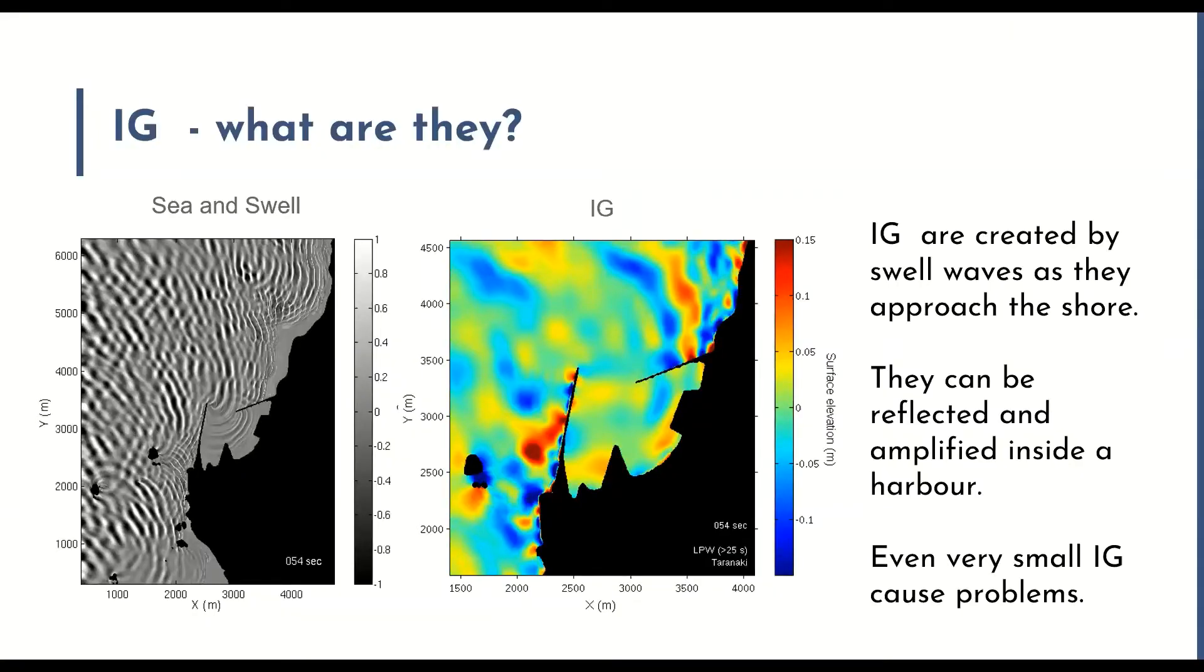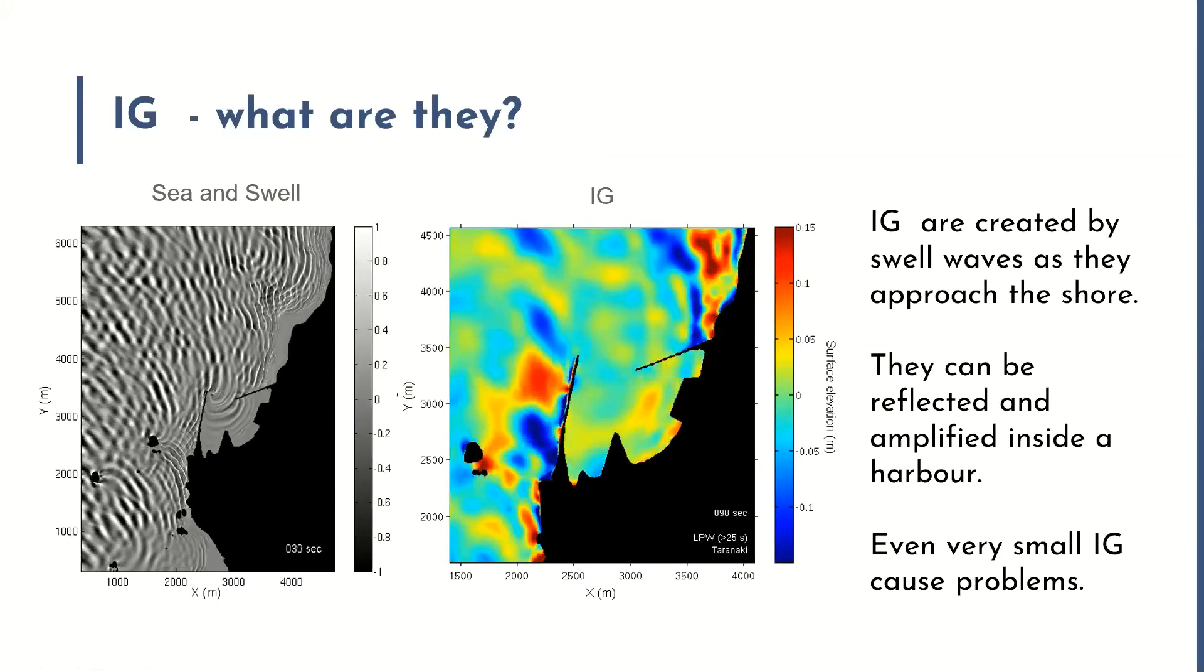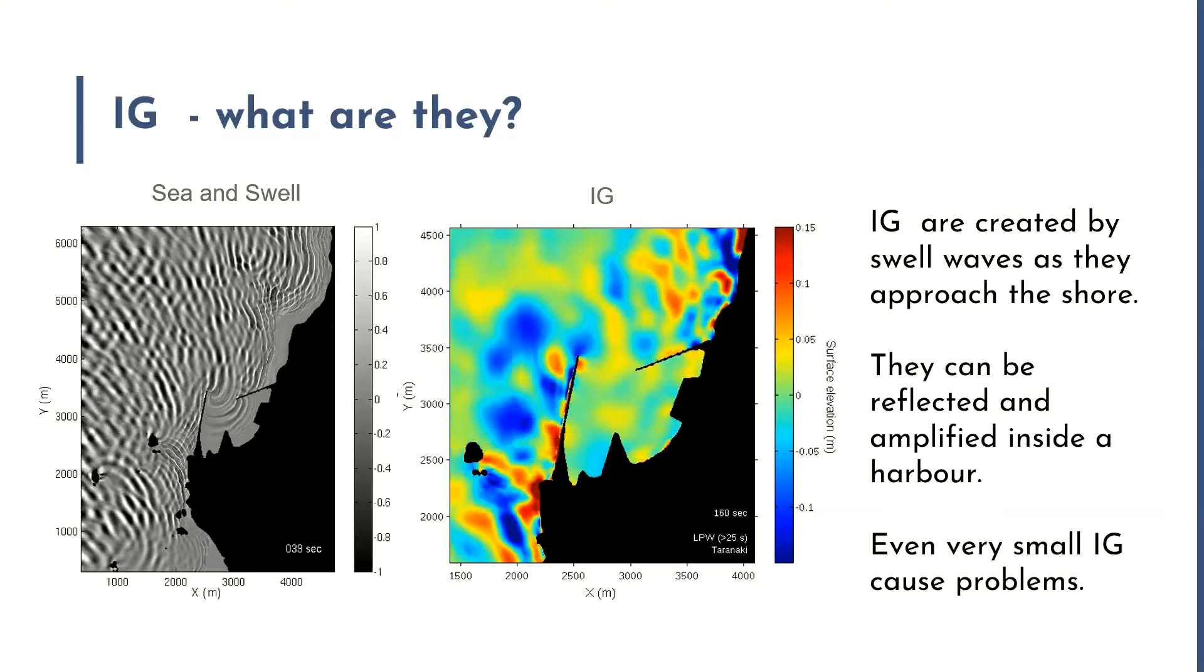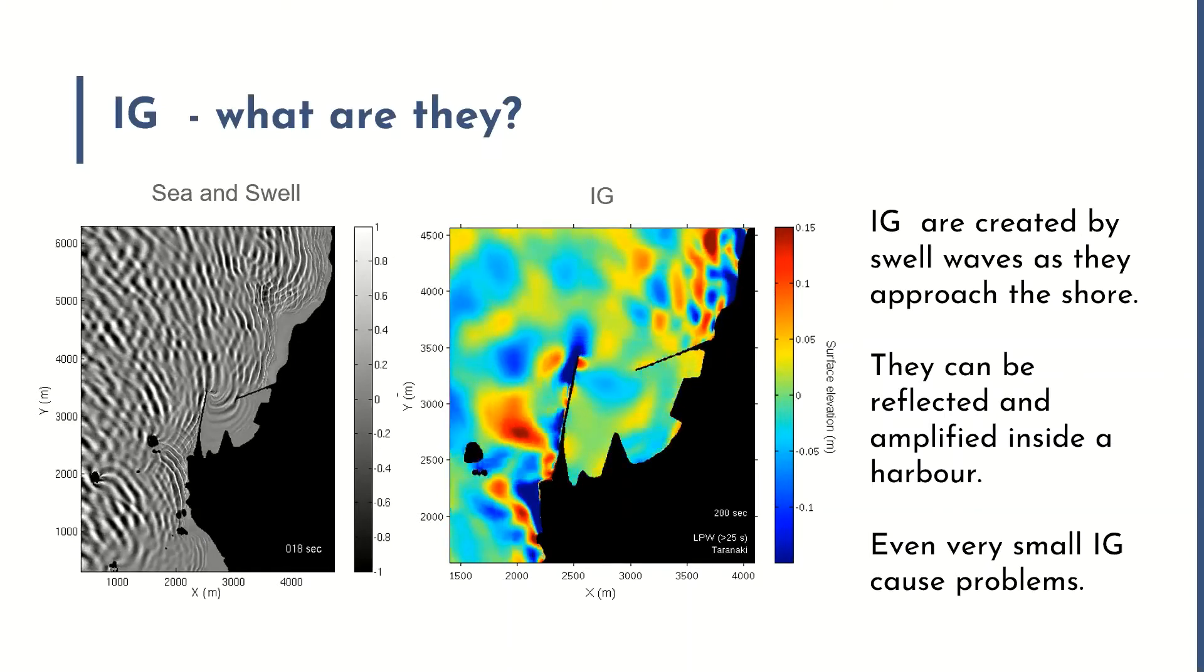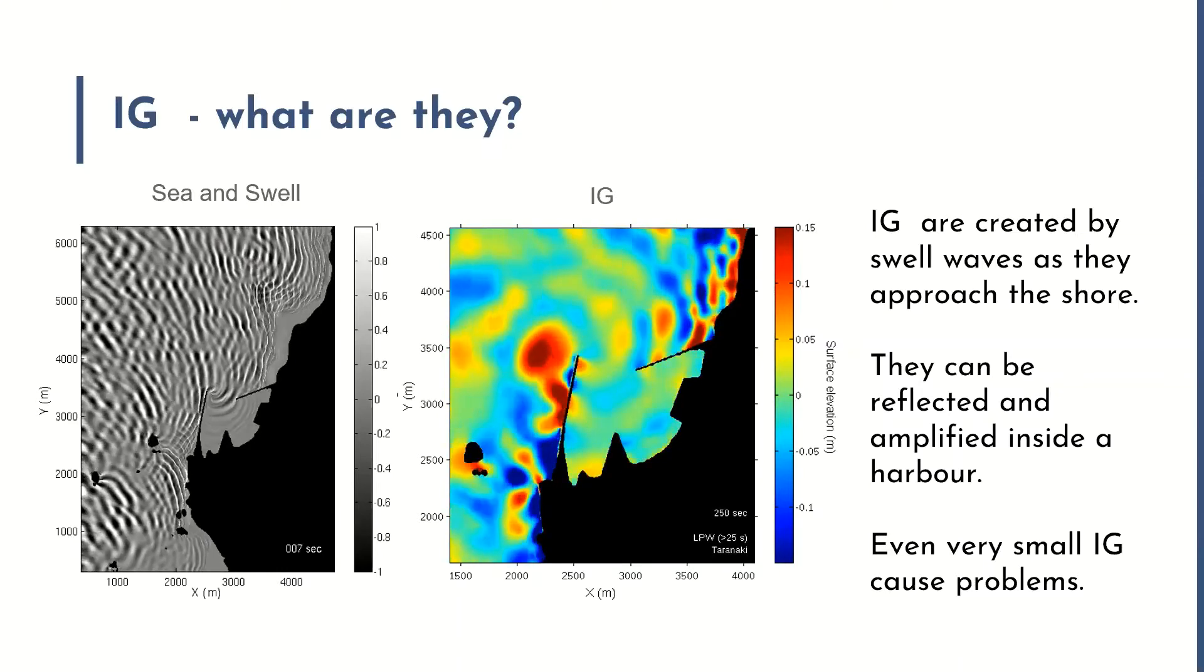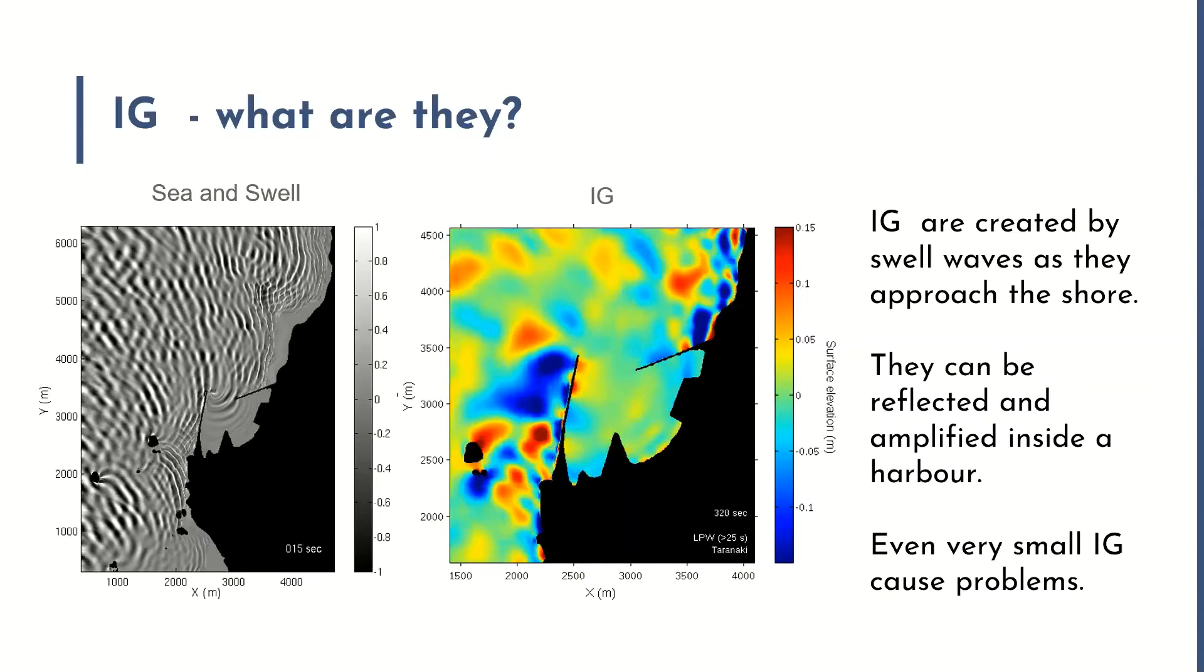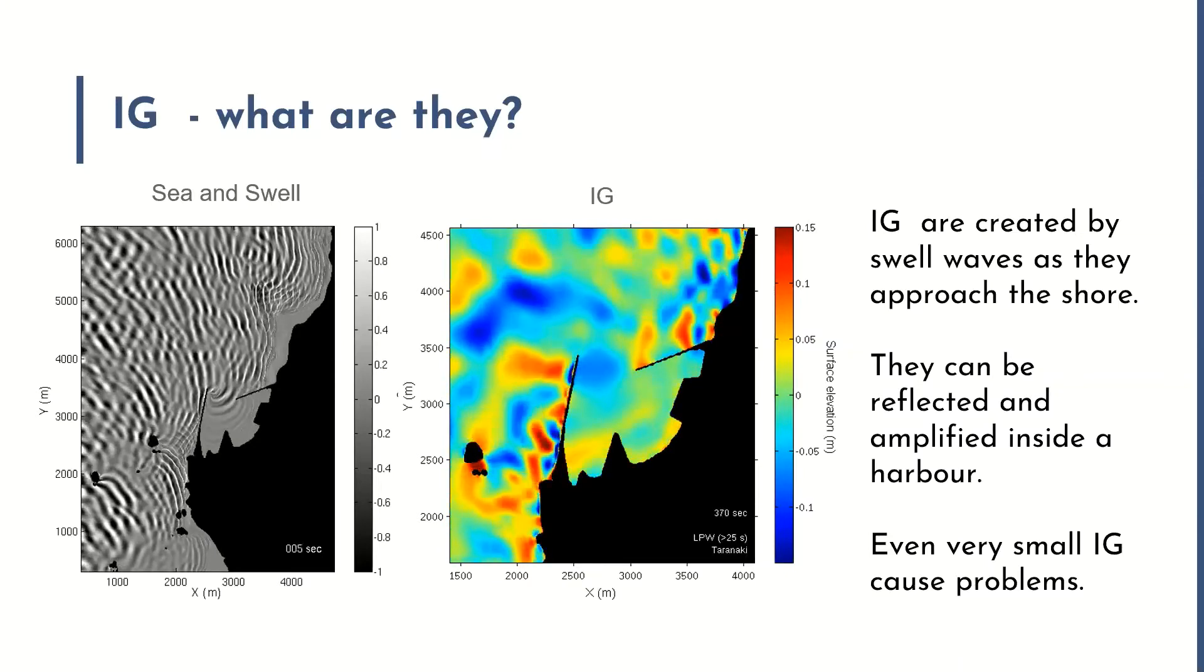Infragravity waves, let's talk about what they are. They're created by swell waves as they approach the shore. And then, just like any wave, they get modified as they start interacting with the bathometry or they reflect off shoreline structures. That's particularly true also within a harbor because you often have very highly reflective walls that contain the harbor, so you end up quite often having patterns of reflection and resonance that can lead to areas where you get amplification of the waves.